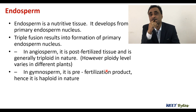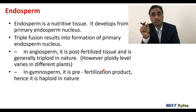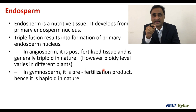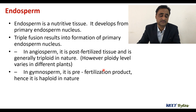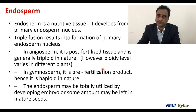Generally it is a triploid structure, but the ploidy can differ. For instance, take an example of a tetrasporic 16-nucleate embryo sac — naturally the ploidy will be different, not triploid. Depending upon the total number of polar nuclei present, the ploidy of the endosperm is decided. Another very important thing: in gymnosperms, endosperm is formed prior to fertilization, so it is a haploid tissue. In angiosperms, normally it is a triploid structure.